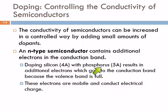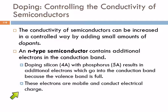If we add some phosphorus atoms, phosphorus has five valence electrons. Those extra electrons are going to have to be in the conduction band because there's not enough space for them in the valence band. So we have additional electrons in the conduction band — those electrons are mobile and conduct electrical charge. We can make a semiconductor more conductive by adding a dopant such as phosphorus in silicon to increase the number of electrons in the conduction band.